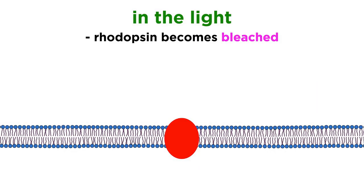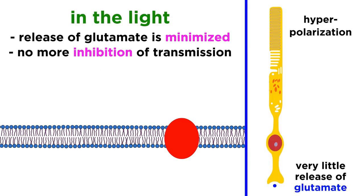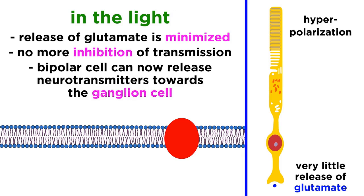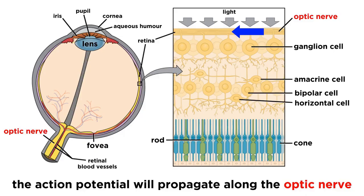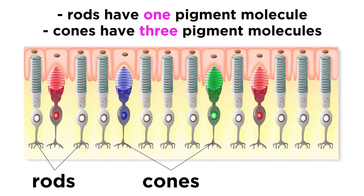When exposed to light, rhodopsin becomes bleached, initiating a cascade of effects that results in the closure of the sodium channels. The rod becomes hyperpolarized, the release of glutamate is minimized, and the inhibition of signal transmission ceases. The bipolar cell can now depolarize and release neurotransmitters towards the ganglion cell, which generates an action potential that propagates along the optic nerve. We should note that rods contain just this one pigment — rhodopsin — while cones contain three, which can act together in varying ways to allow for the perception of any color in the visible spectrum.